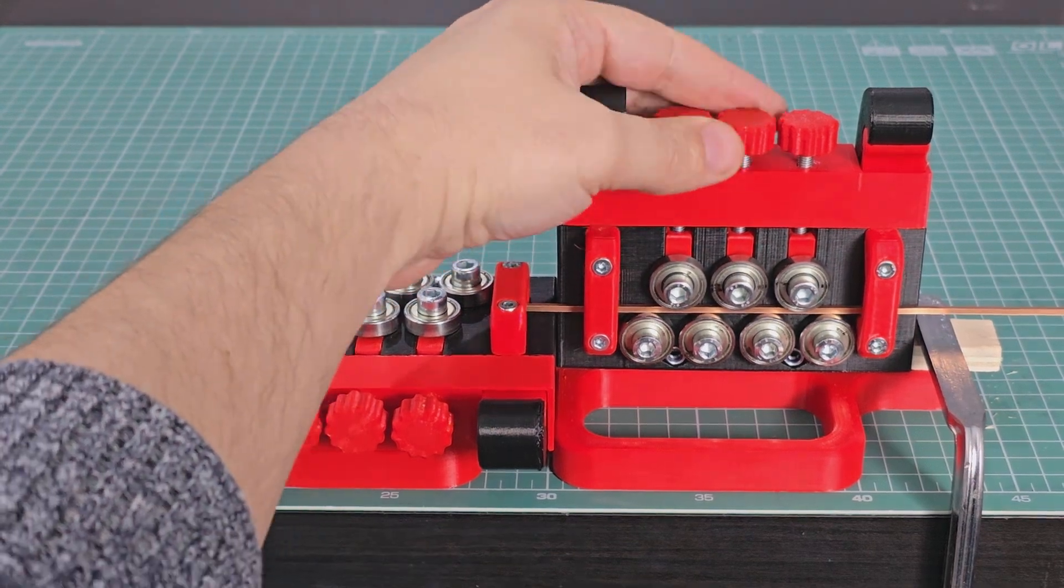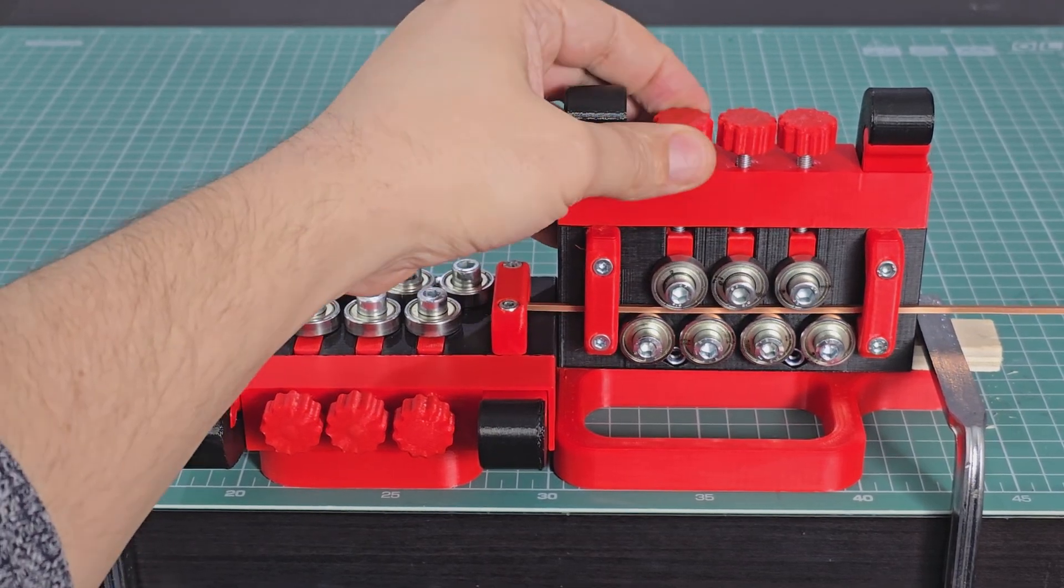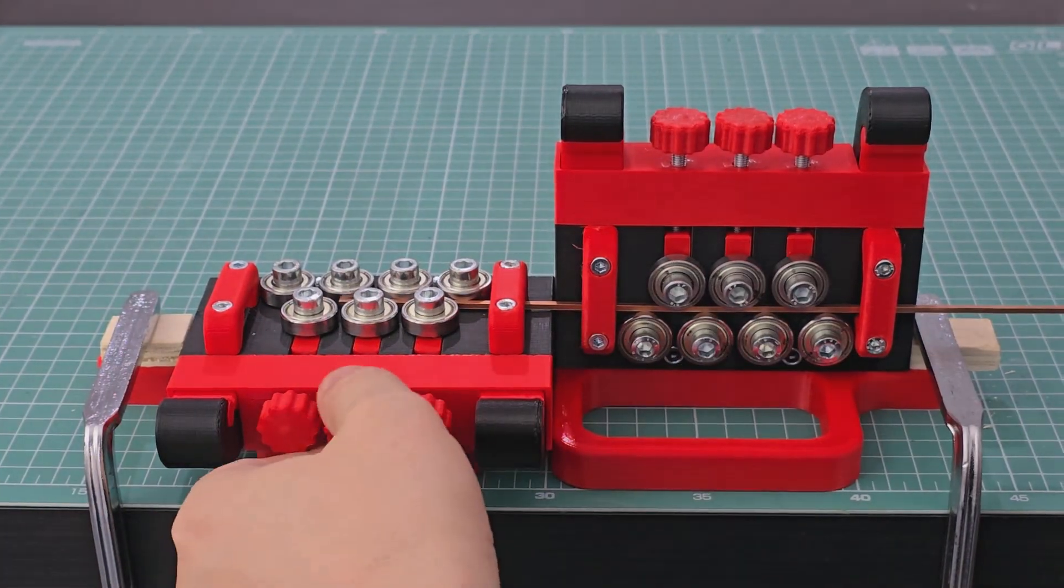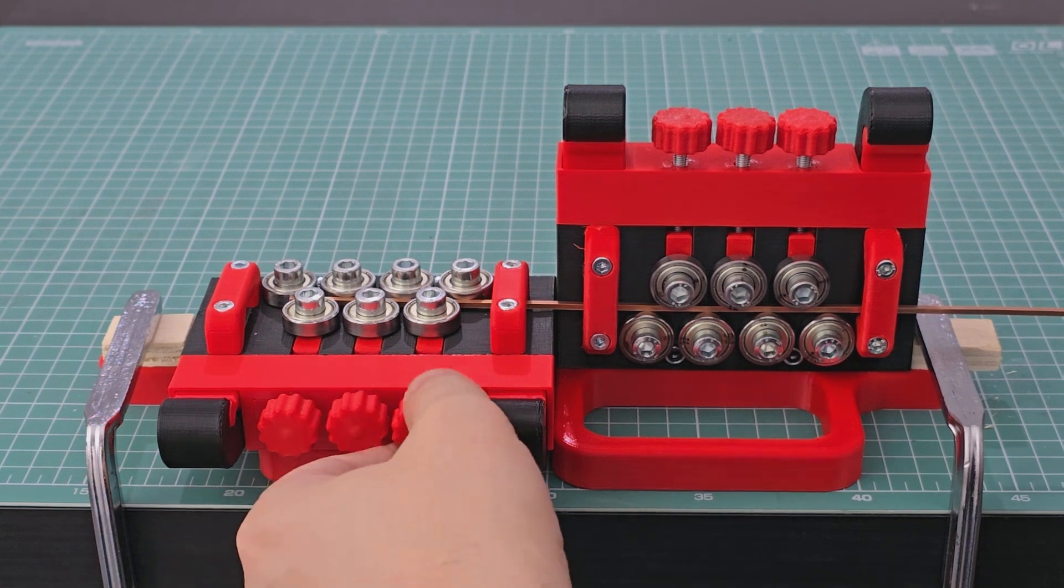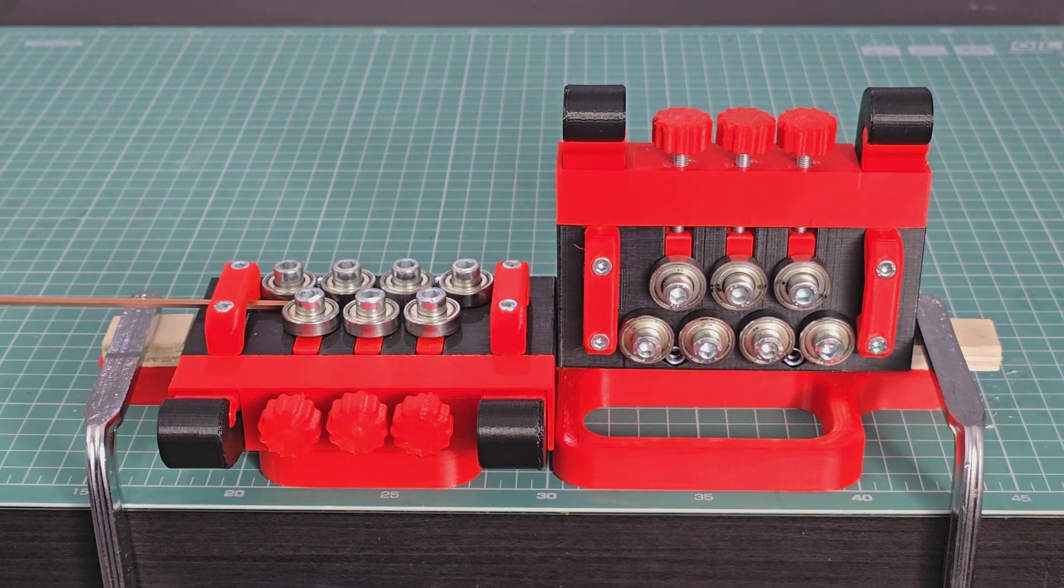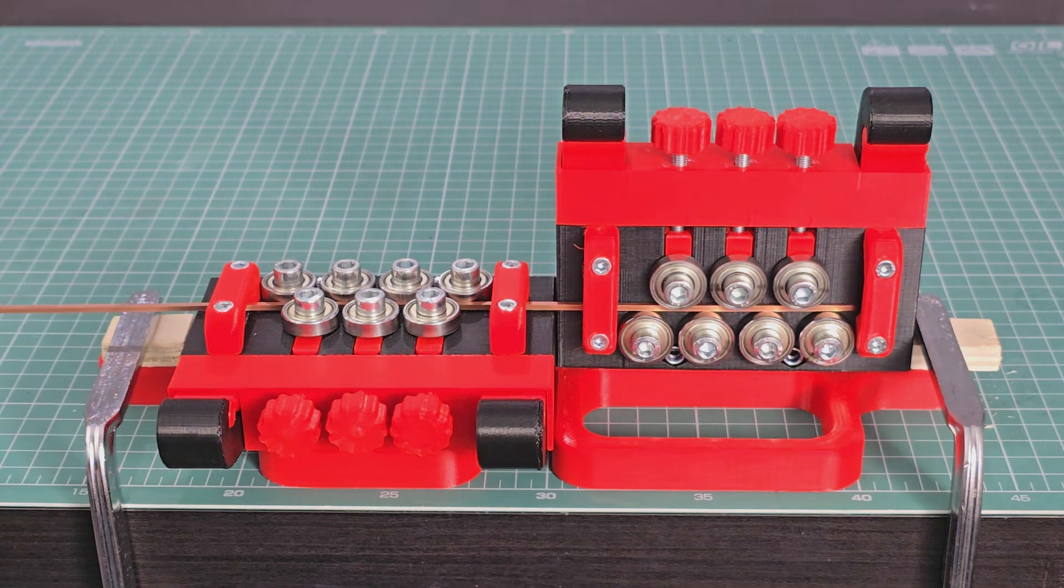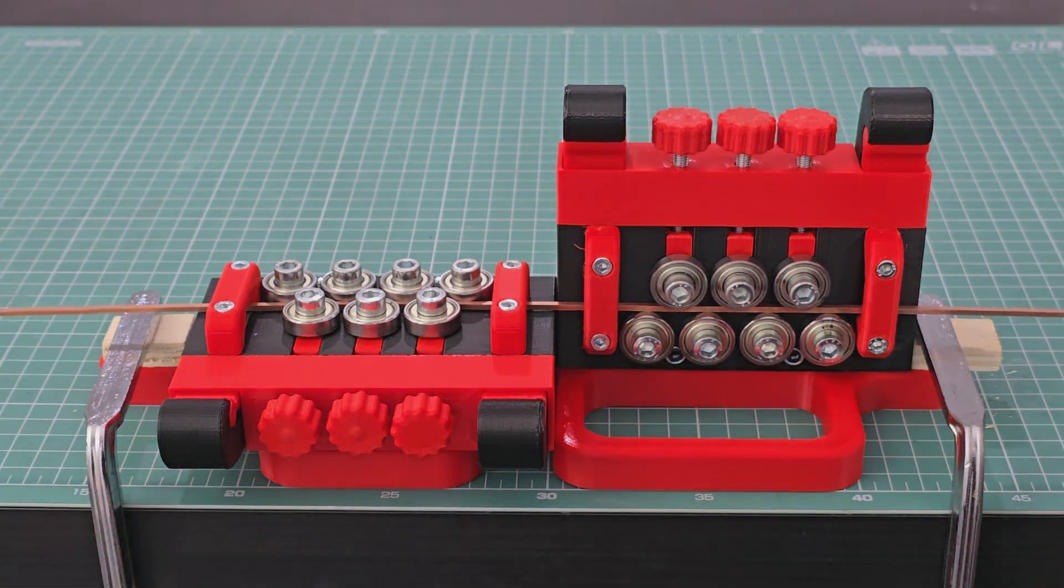But not very straight. So now I'm doing the final step which is taking all the pressure off. Then reapplying pressure carefully just until the adjustable rollers start engaging. Doing just a couple more passes under this almost zero pressure straightens out the wire, taking out the large radius curve resulted in the kinks removal step.